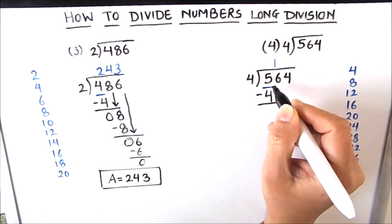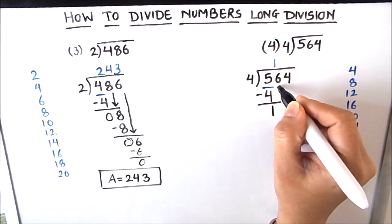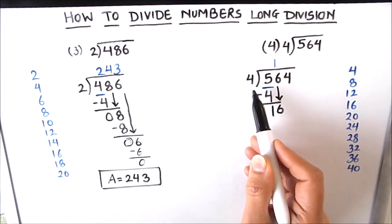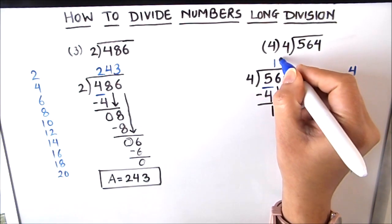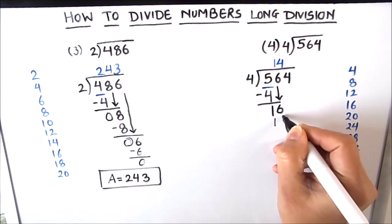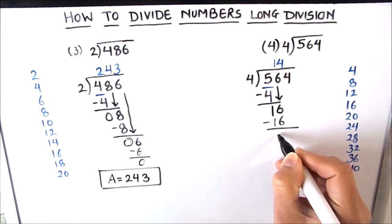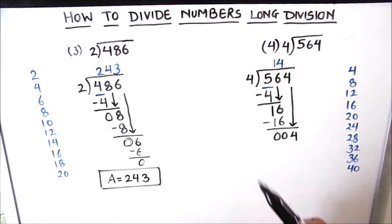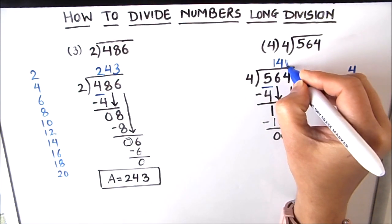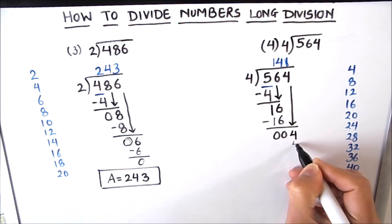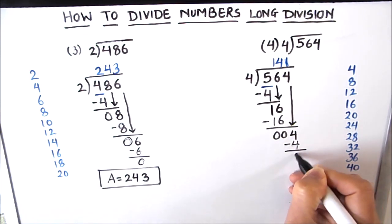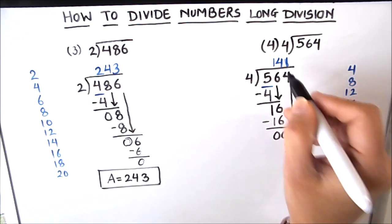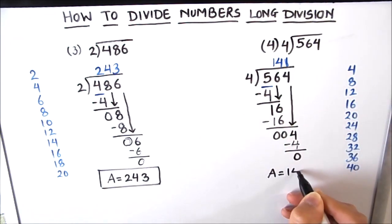We subtract: 5 minus 4 is 1. We have more digits, so we bring down the next digit which is 6. Now our dividend is 16 and we divide 16 by 4: 4×4=16. We write 4 in the quotient and 16 just below 16, then subtract: 16 minus 16 is 0. We have one more digit to divide, which is 4. Our dividend is 4 and divisor is 4: 4×1=4. We write 1 in the quotient, subtract 4 from 4, and get 0. We are done with all the digits — the final answer is 141.